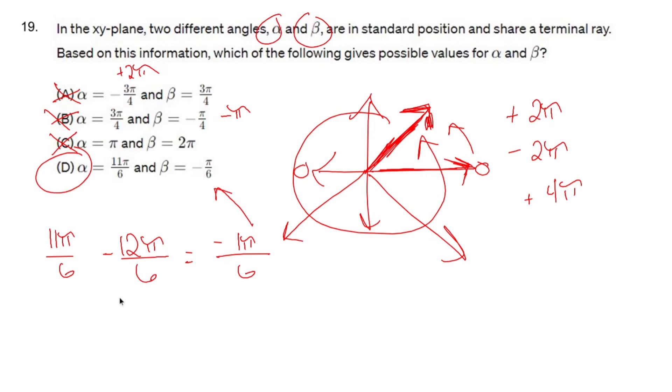So yeah, problem 19 is basically saying, which of these are exactly the same? Add 2π, subtract 2π, and so on. D is going to be your answer. Pretty standard, hope this helps.